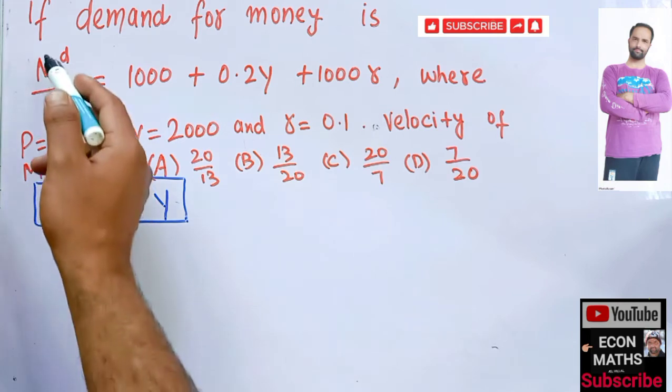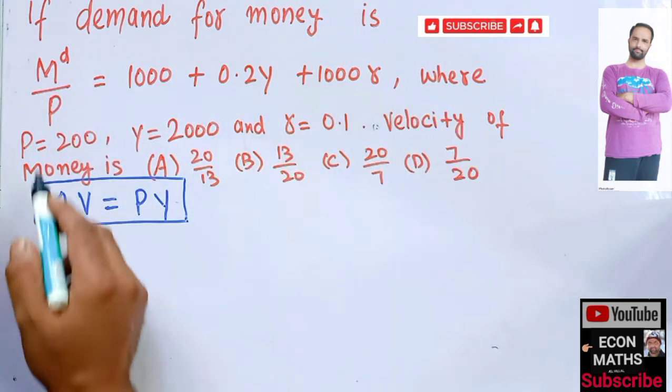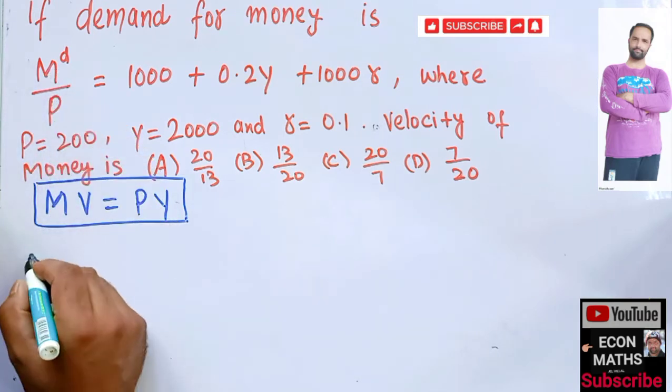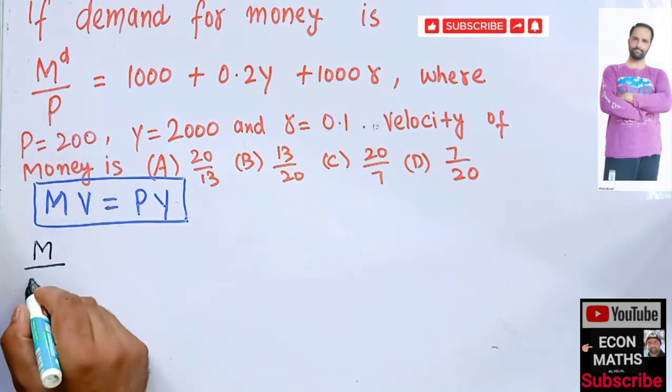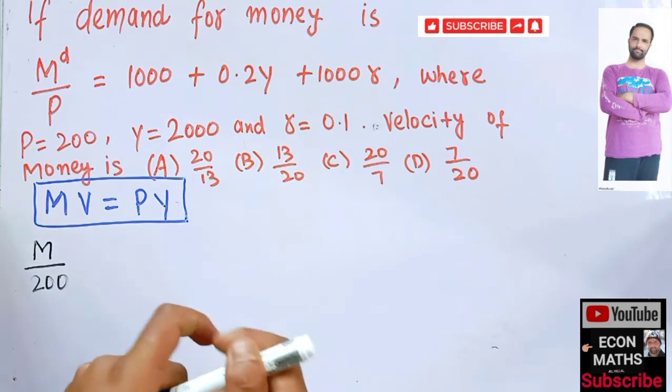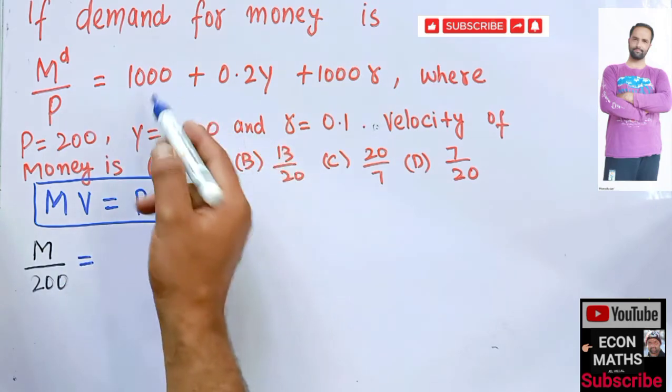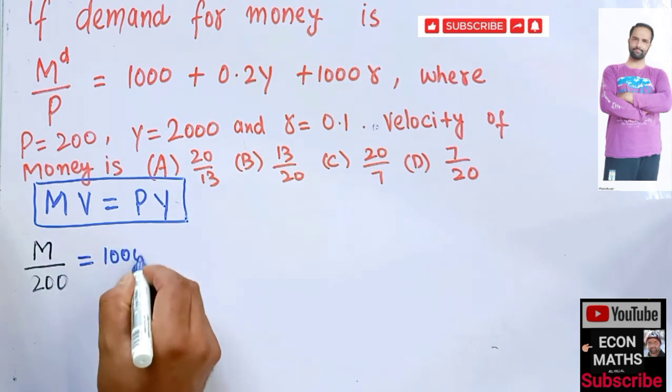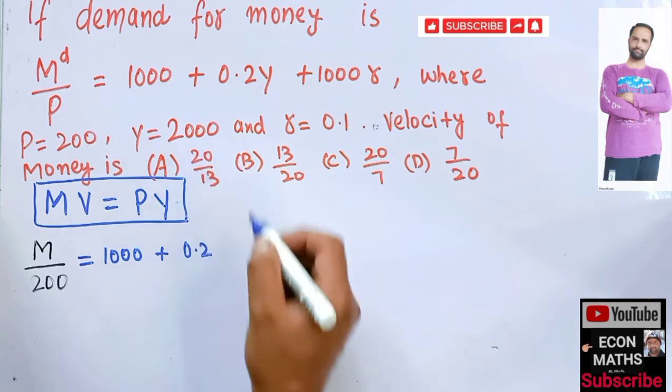So to find the value of M we solve this very equation. We have M/P, so M/P is being given as 200. So let me write it here: 200 is equal to, we have 1000 here, 1000 plus 0.2...